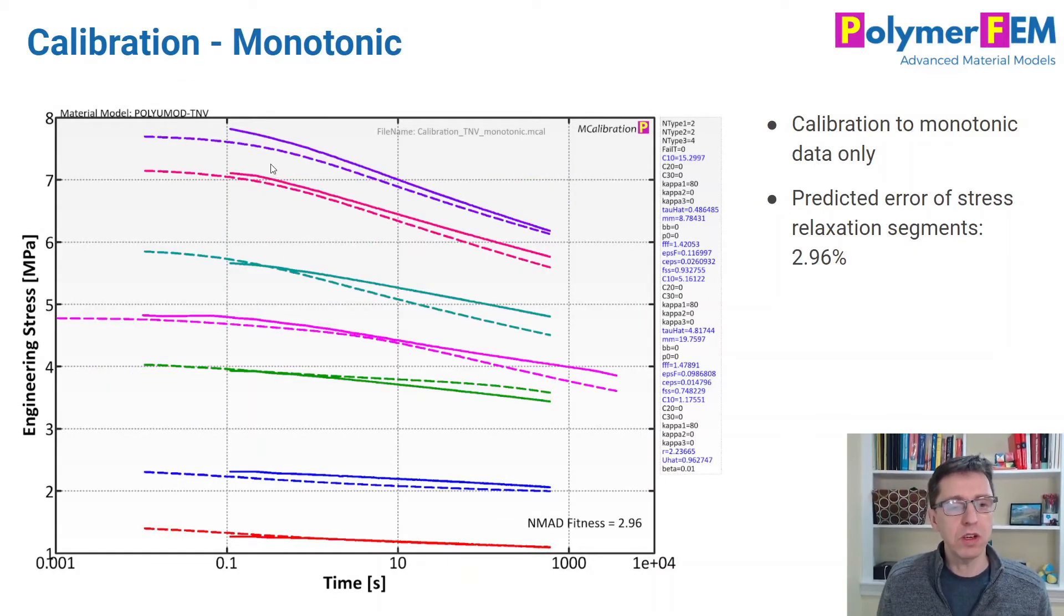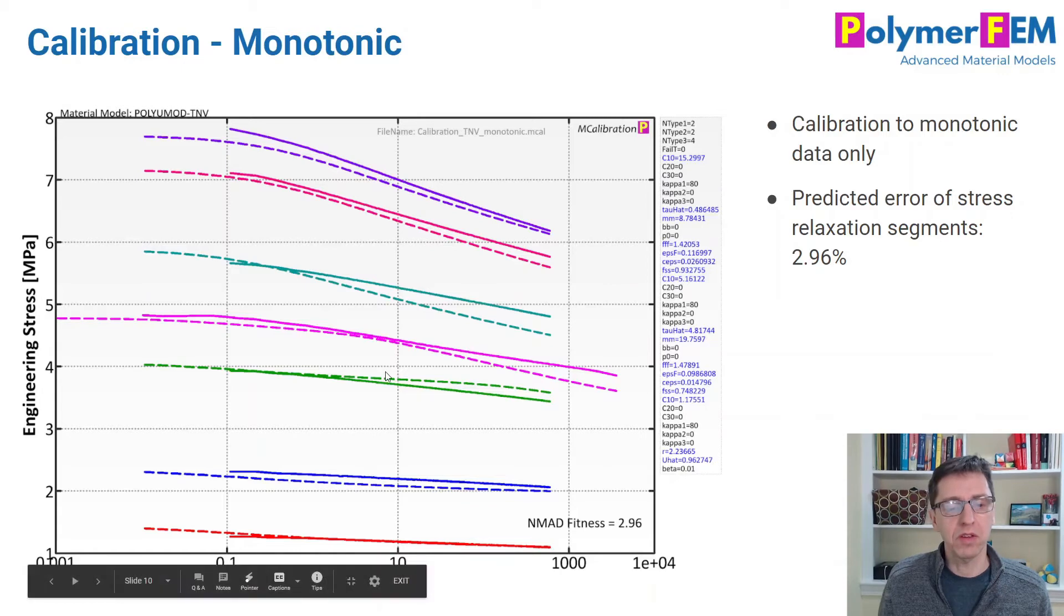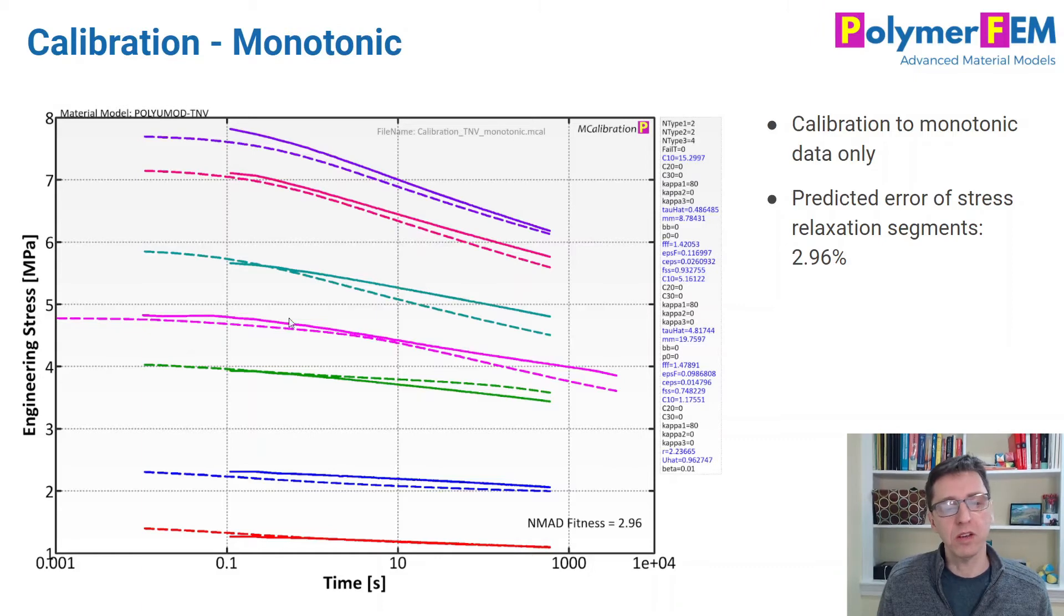Here's the stress relaxation results. The solid lines are the experimental results for these seven different relaxation segments. The dashed lines are the predictions from the model. This again is very cool. Even though we only had data for two different strain rates when we calibrated the model, we could actually predict the stress relaxation response pretty well. It was perhaps a little bit of luck in terms of how the calibration actually worked out, but it's very interesting to see that.